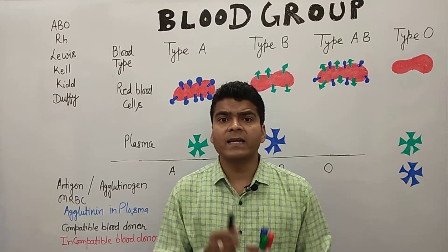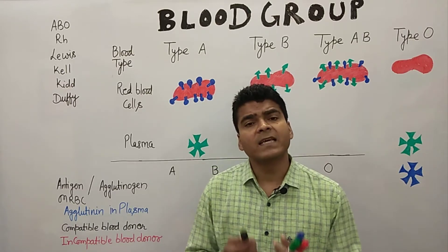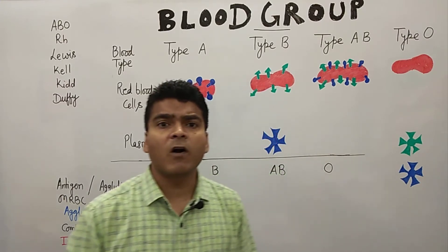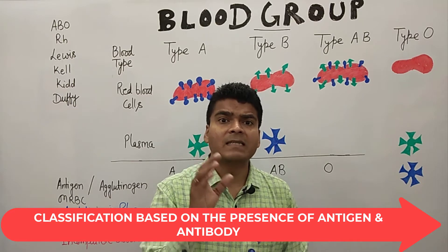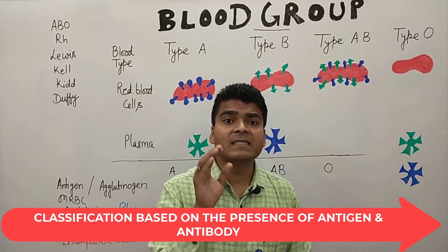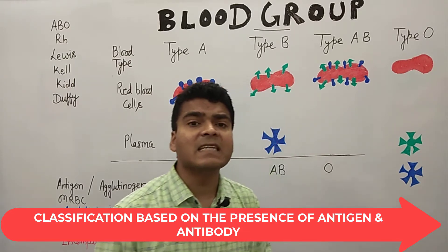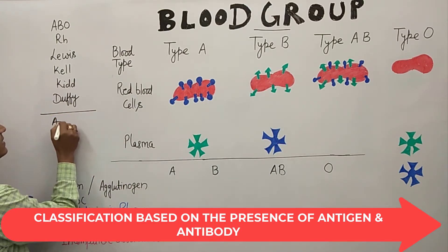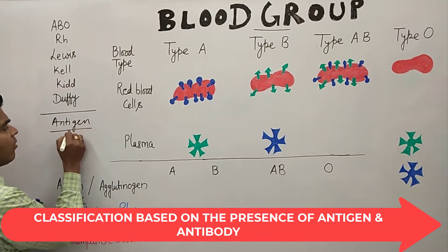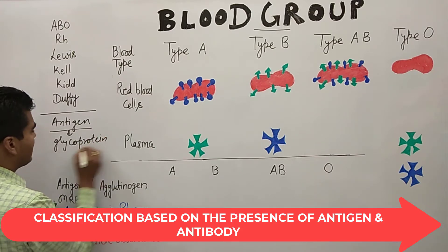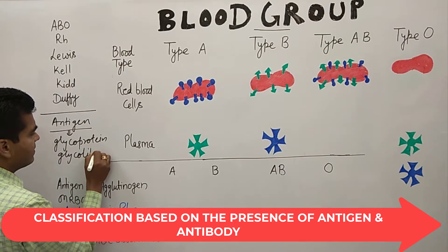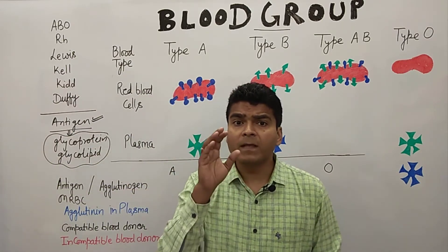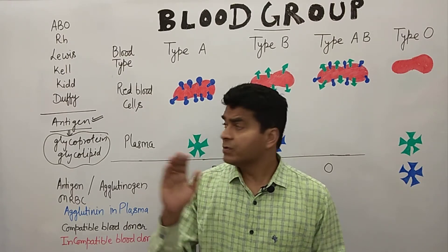The first question coming to mind is: how are blood groups classified? On which basis do scientists classify blood groups? The answer is that in our blood cells — specifically in red blood cells (RBCs) — we find some antigens. These antigens are made up of glycoprotein and glycolipid. These are important antigen structures found in blood groups.